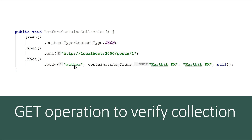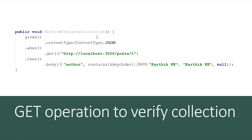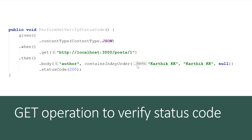Finally, we'll also discuss how to verify the status code. This is very simple — you call `.statusCode(200)` which will return true if the status matches, or throw an assertion error if it doesn't. These assertions can be chained and extended as needed. We'll see how easy it is in REST Assured to keep extending your code.